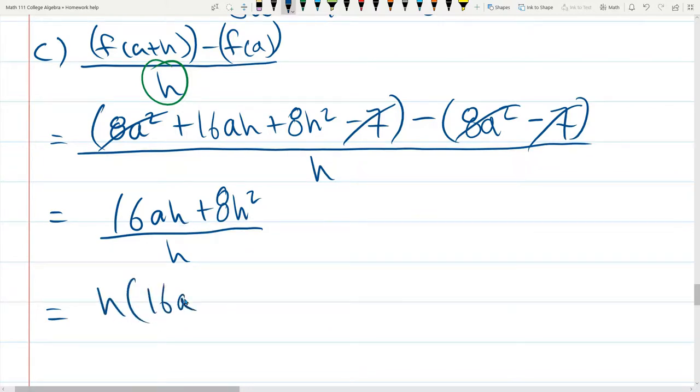We're left with h times 16 a plus 8 h to the first power divided by h. Now, you can see it's h multiplied by this other thing divided by h. So, because it's h times, we can now cancel the h's, and we're left with just 16 a plus 8 h.